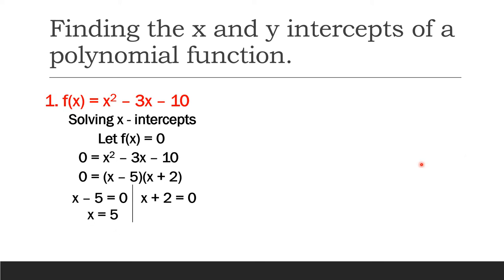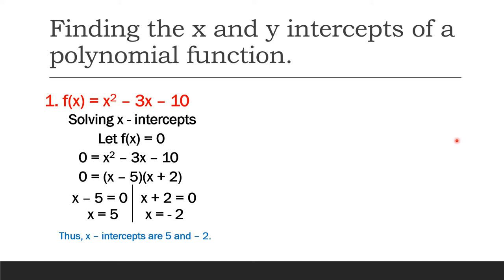For x - 5 = 0, x equals 5, and for x + 2 = 0, x equals negative 2. Thus, the x intercepts of the polynomial function x² - 3x - 10 are 5 and negative 2.